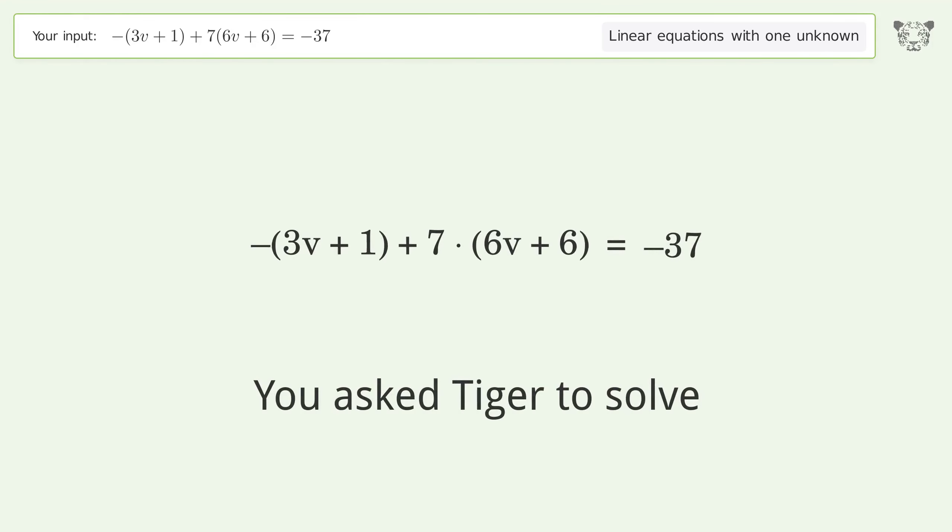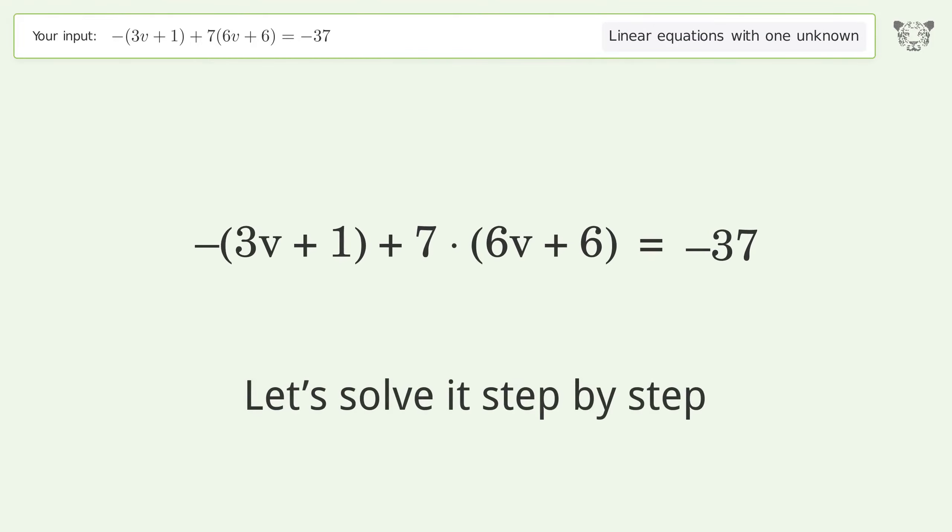You asked Tiger to solve this linear equation with one unknown. The final result is v equals negative 2. Let's solve it step by step.